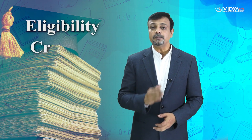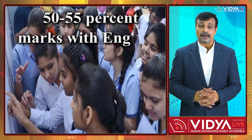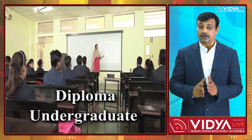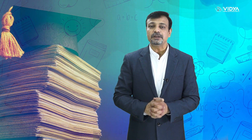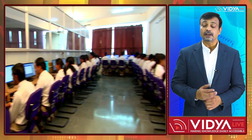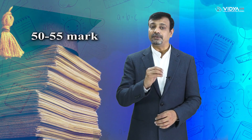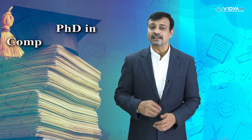The eligibility criteria for pursuing computer applications can vary from college to college. However, generally, students who passed the class 12th examination with an aggregate of a minimum of 50 to 55 percent marks with English as a subject can get admission into diploma and undergraduate computer application courses. Students seeking admission into postgraduate courses must have completed graduation in computer applications, computer science, or any other related field with a minimum of 50 percent marks. A Master of Computer Applications, Master of Computer Science, or any other related field with 50 to 55 percent marks is mandatory for pursuing a PhD in computer applications.